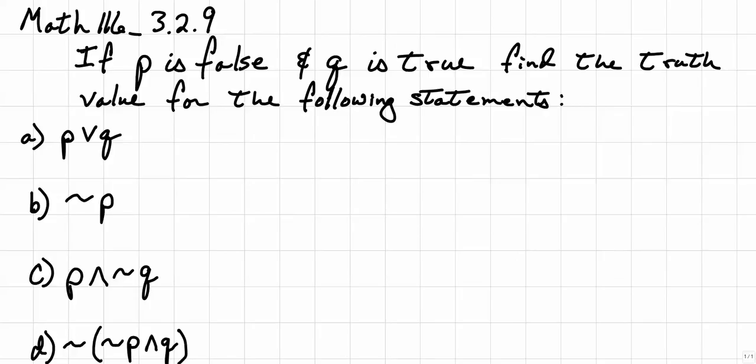If P is false and Q is true, find the truth value for the following statements. We have four statements that we are going to find the truth value for.